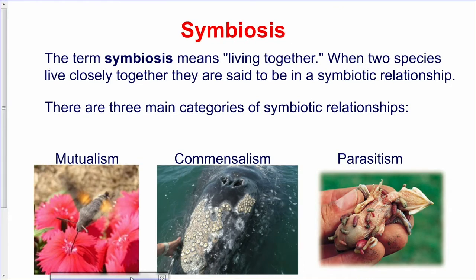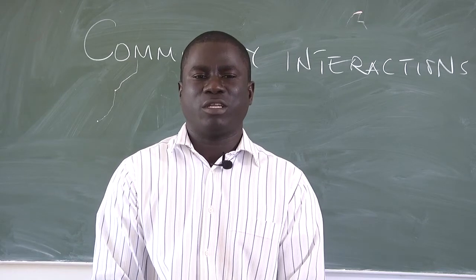Moving on to symbiosis: when you say symbiosis, it means organisms living together. In a symbiotic relationship, sometimes some organisms benefit and sometimes they do not. When two species live closely together, they are said to be in a symbiotic relationship. We have three different relationships: mutualism, commensalism, and parasitism. These are the feeding relationships we are going to discuss.